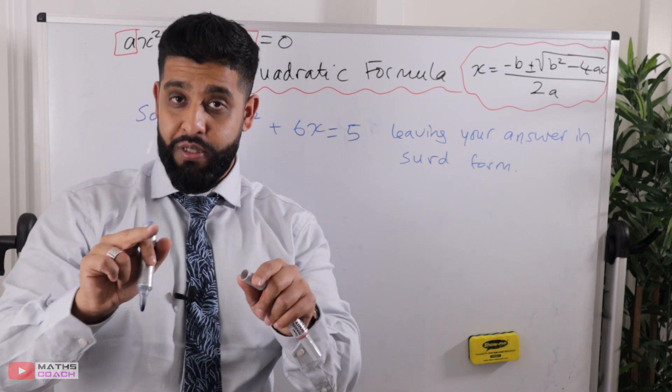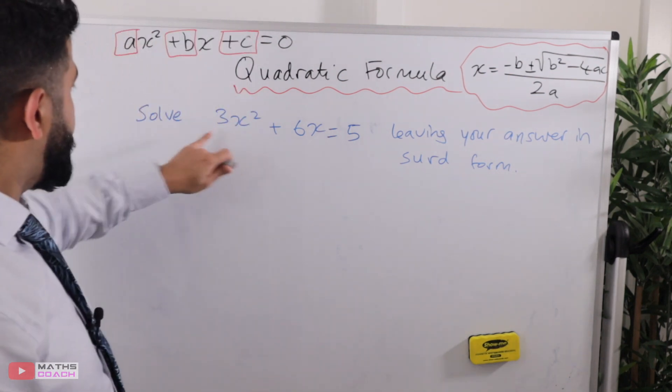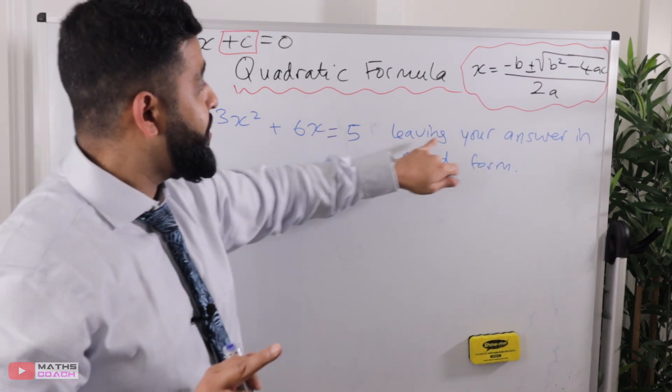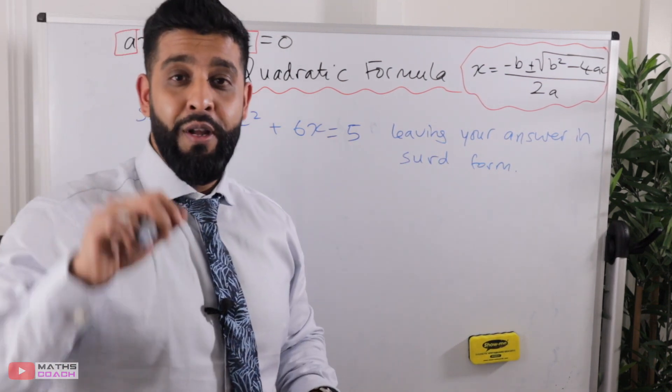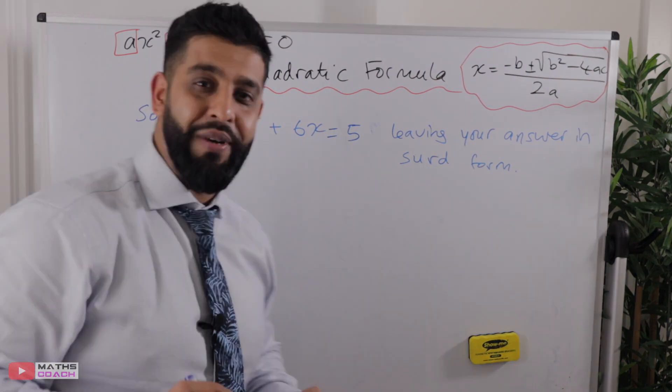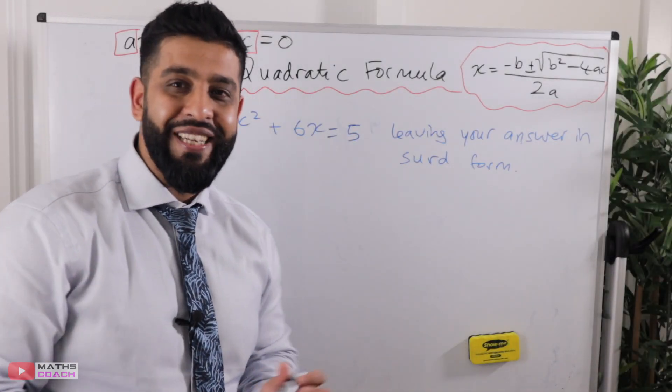This time, I want you to do this one. Solve 3x squared plus 6x equals 5, leaving your answer in surd form. Press pause and come back to it, and then compare your answers with mine. Let's see what you did.